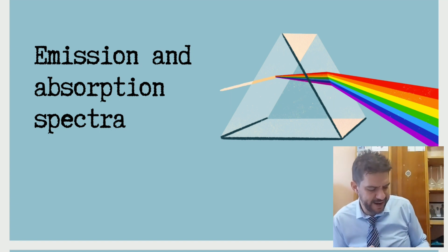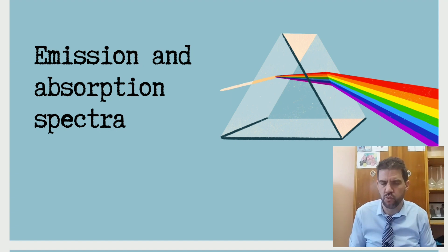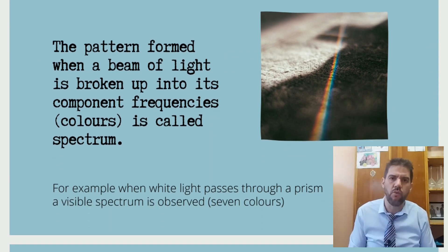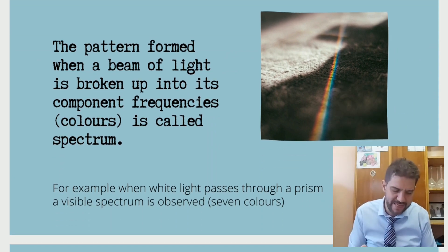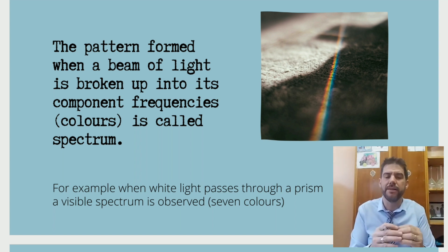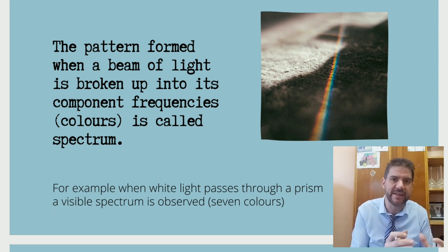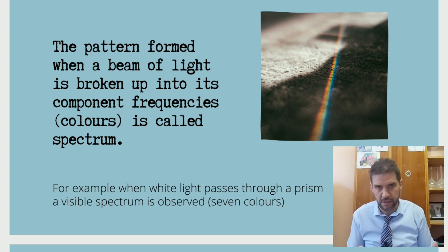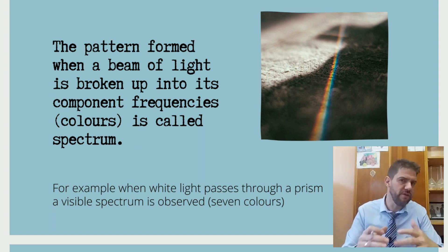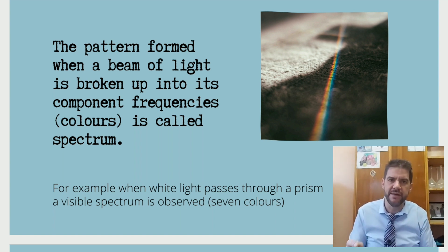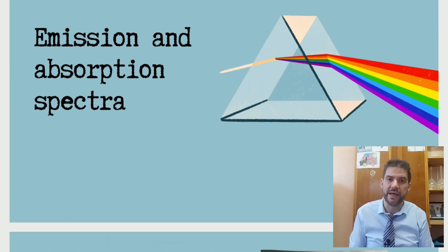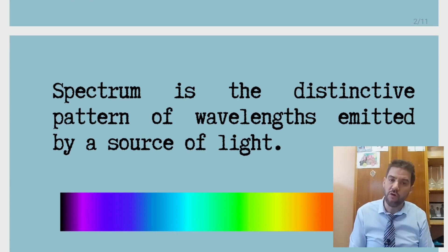This is emission and absorption spectra. What is the spectrum? That is the pattern formed when a beam of light is broken up into its component frequencies, or when a beam of light is broken into colors. When light is broken into the different colors, that is what we call a spectrum. For example, if light passes through a prism — you know that from grade 8 — then light is broken into different colors, as you can see in that picture there.